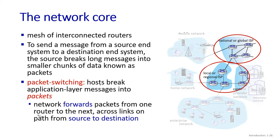The network forwards packets from one router to the next across links on the path from source to destination — this is known as routing. The phenomenon I just described, where the router selects an output link, is known as packet switching. There are two fundamental approaches to moving data through a network of links and switches: circuit switching and packet switching.